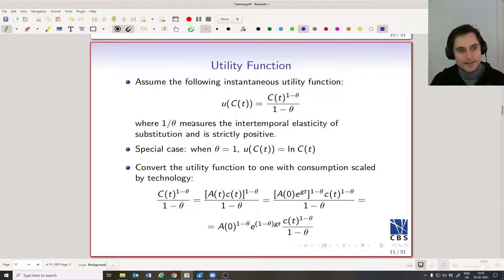You can maybe tell by the way I'm describing this intertemporal elasticity of substitution that there's a close relationship here with the substitution effect versus income effect. If you have a low intertemporal elasticity of substitution, or a high θ, then the income effect typically will dominate. Whereas if you have a high intertemporal elasticity of substitution, the substitution effect will dominate.